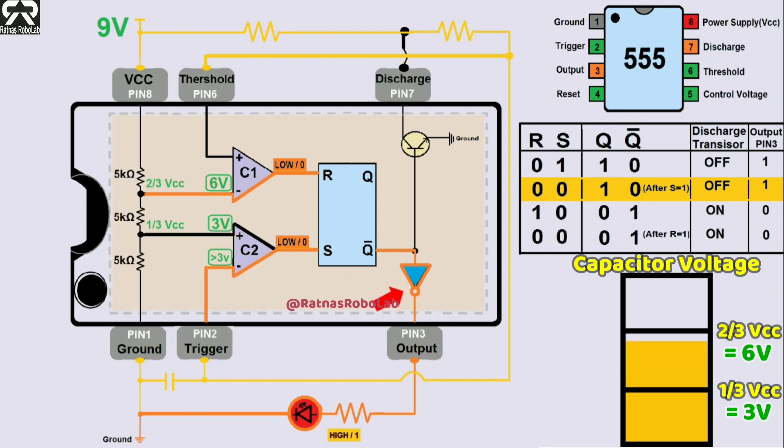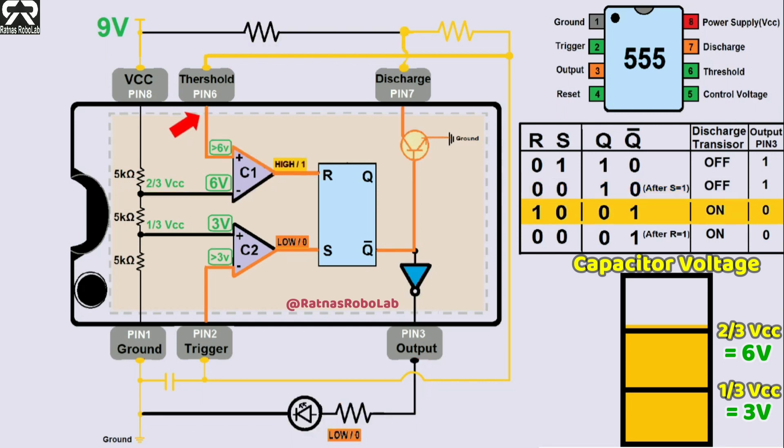But the 555 continues to output high. When the capacitor charges higher than 2/3 Vcc or higher than 6V, comparator 1's positive terminal or pin 6 or threshold pin gets higher voltage than comparator 1's negative terminal. Comparator 1's positive terminal takes priority and comparator 1's output becomes high, resetting the 555 output to low. LED has been turned off.